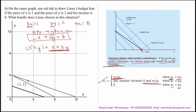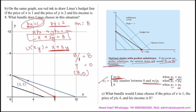Here, good x (good one) has a lower price than good y (good two), so Linus spends his entire income on good x. With income of 8 and price of good x equal to 1, he consumes 8 units of good x and zero units of good y. His consumption bundle is (8, 0).